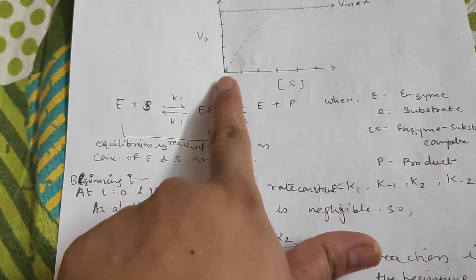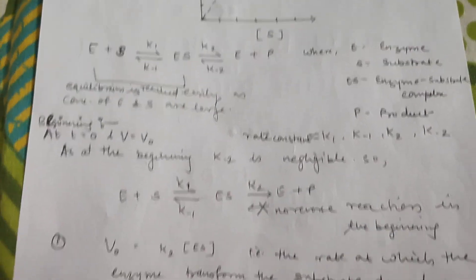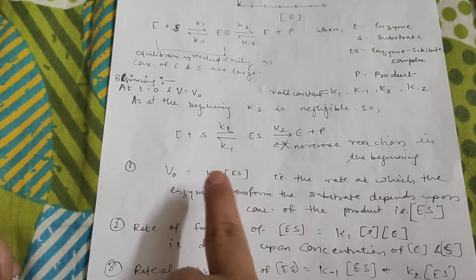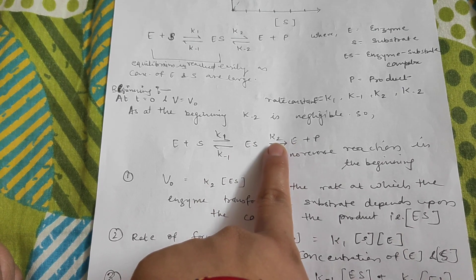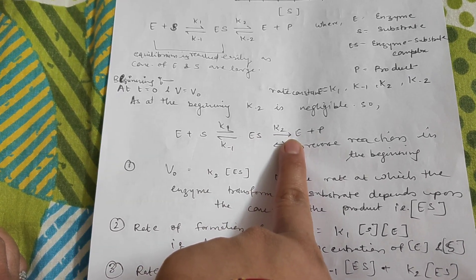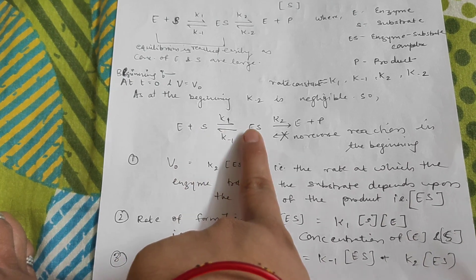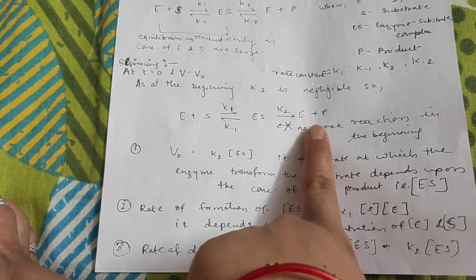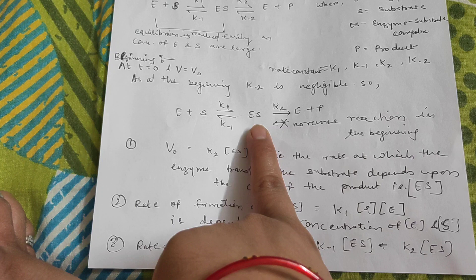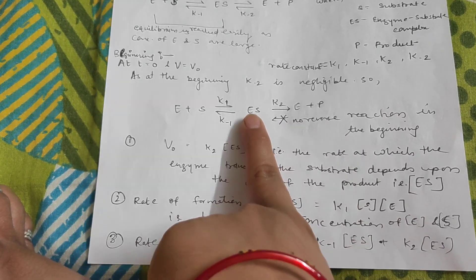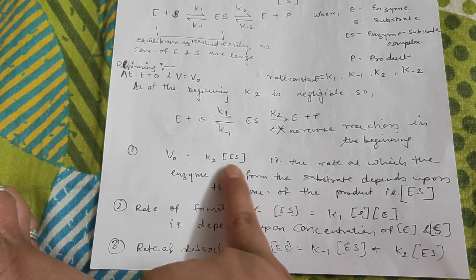At the beginning when time T=0, we consider the velocity as V0. The first assumption is that V0, the initial velocity of the reaction, depends upon K2 multiplied by [ES]. Why K2·[ES]? Because ES is dissociating into free enzyme and product. As more enzyme binds to substrate and forms more ES complex, more product will be formed. So the velocity depends on the quantity of ES, giving us V0 = K2·[ES].